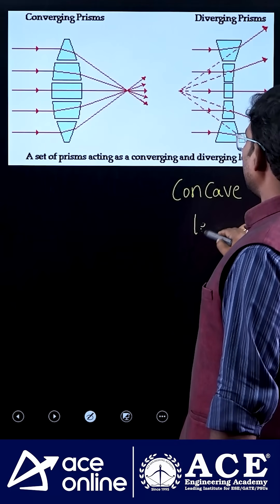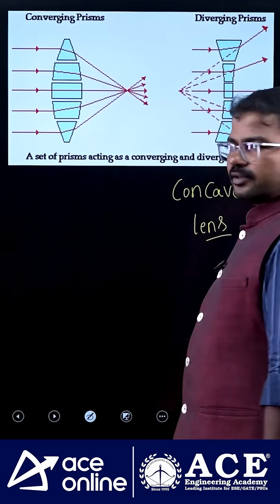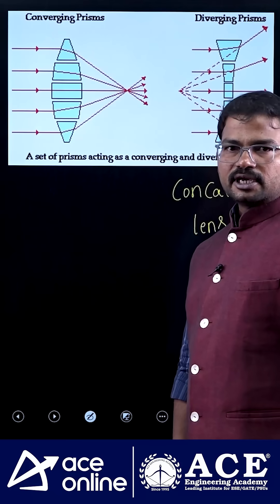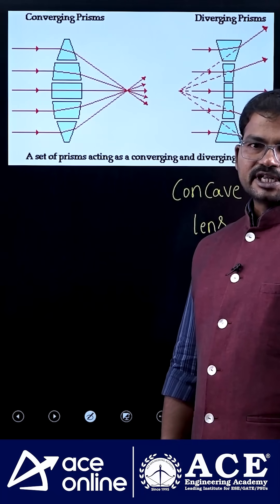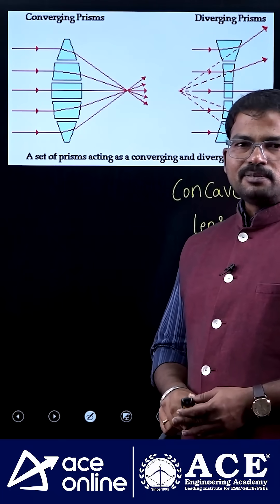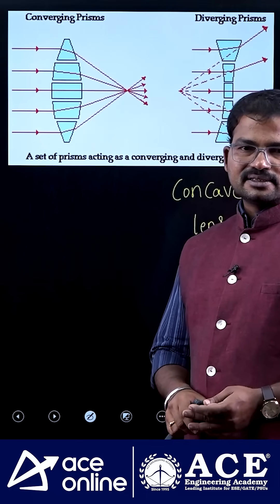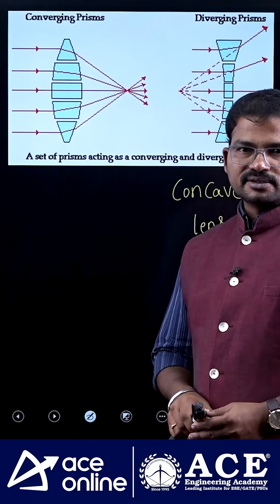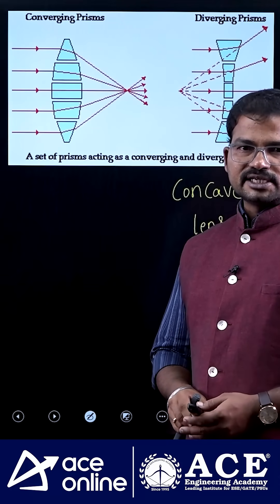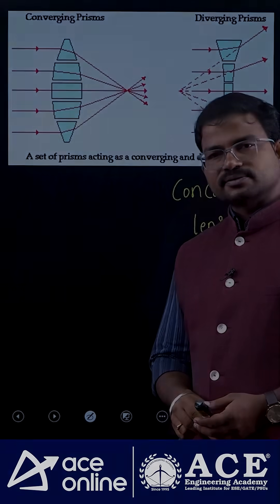I have a question for you: what is the optical power of a convex lens — is it positive or negative? If you know the answer, please comment. Thank you.